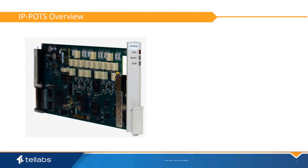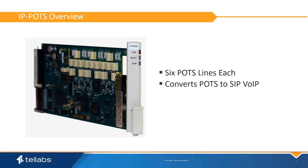The TELABS IP POTS card is a six-line card that supports POTS analog phone lines. It allows conversion of existing POTS analog pairs into SIP voice over IP lines, completely removing them from the TDM infrastructure and registering them directly with the service provider soft switch. This allows complete elimination of all TDM infrastructure related to POTS at a site, and the customer sees no difference in their POTS service.